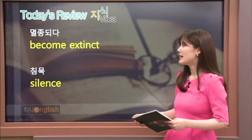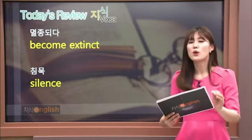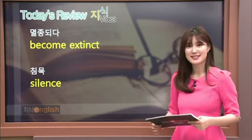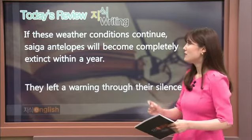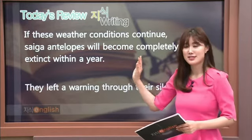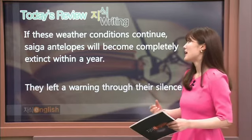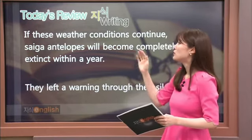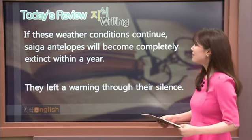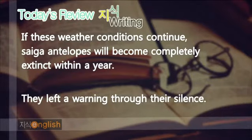Let's review everything we learned today. '멸종되다' is 'become extinct.' Saiga antelopes will become completely extinct within a year if we don't do something about it. '침묵' is 'silence.' The first sentence: 'If these weather conditions continue, Saiga Antelopes will become completely extinct within a year.' This is a conditional sentence. When talking about something in general, don't forget to pluralize your nouns. The second sentence: 'They left a warning through their silence.' Very good.